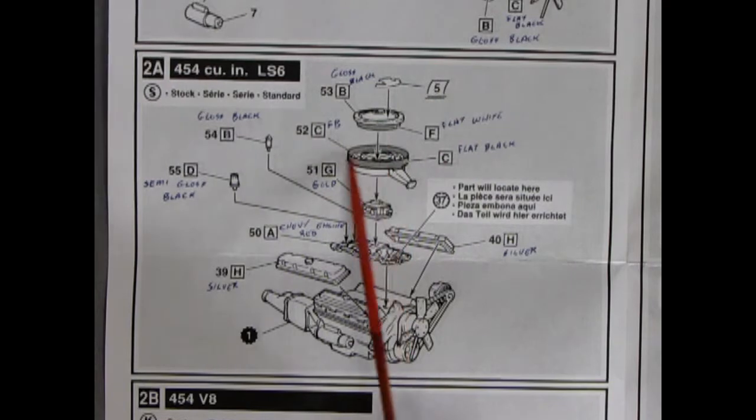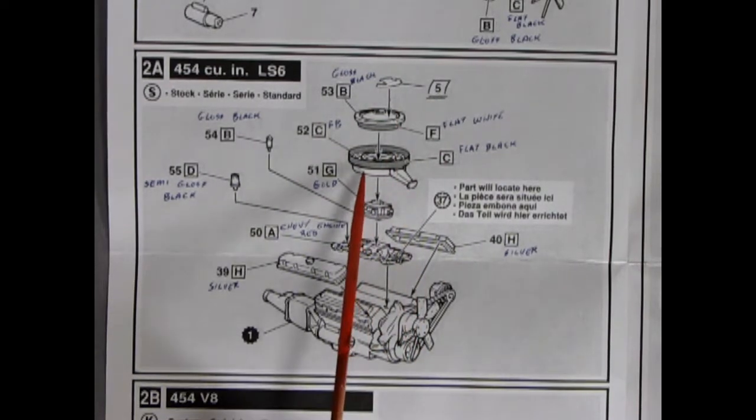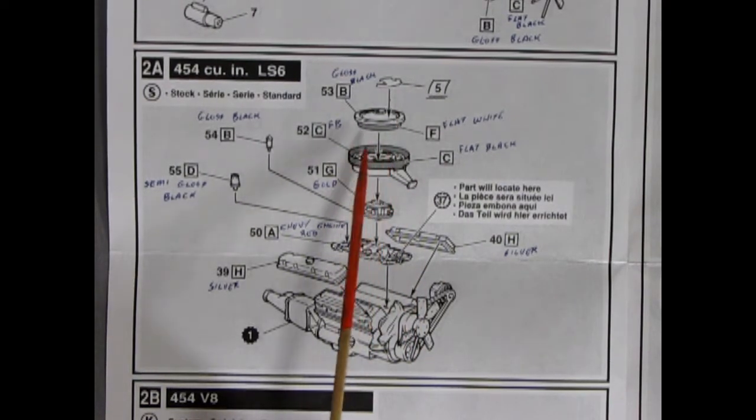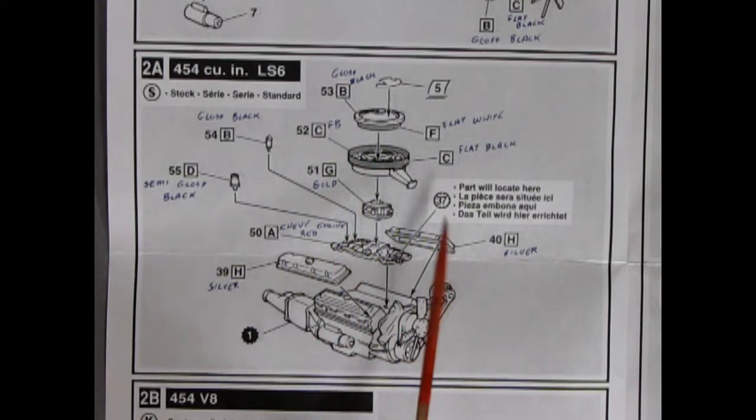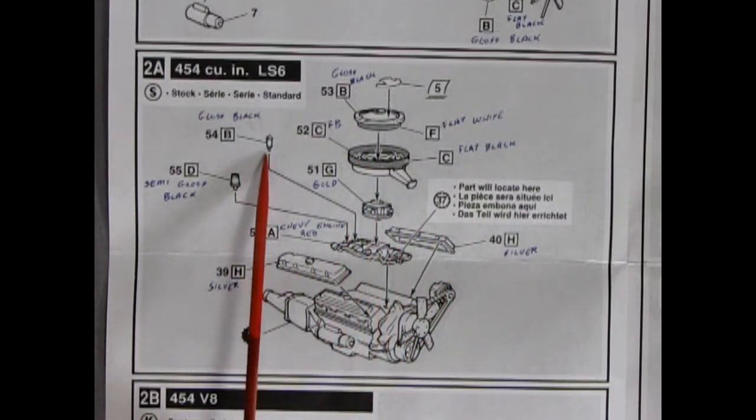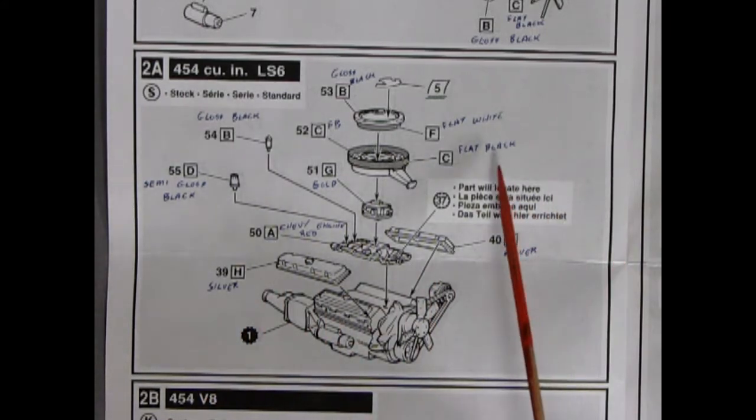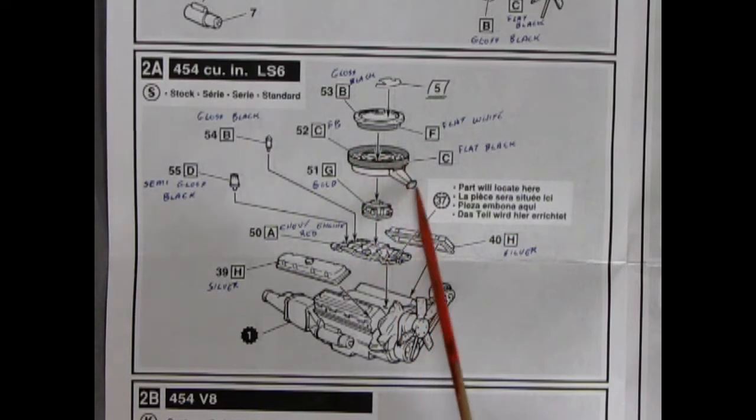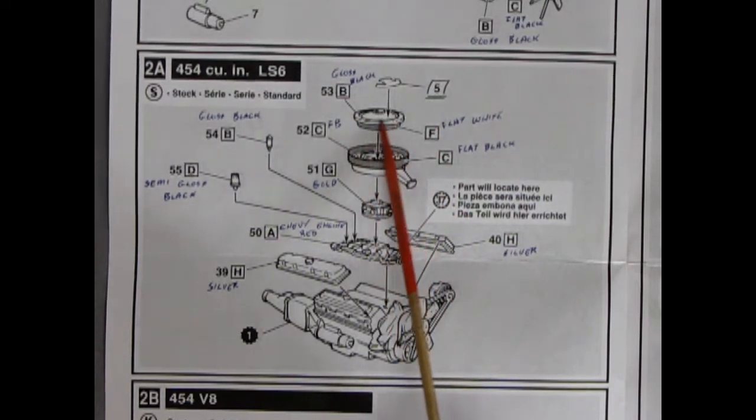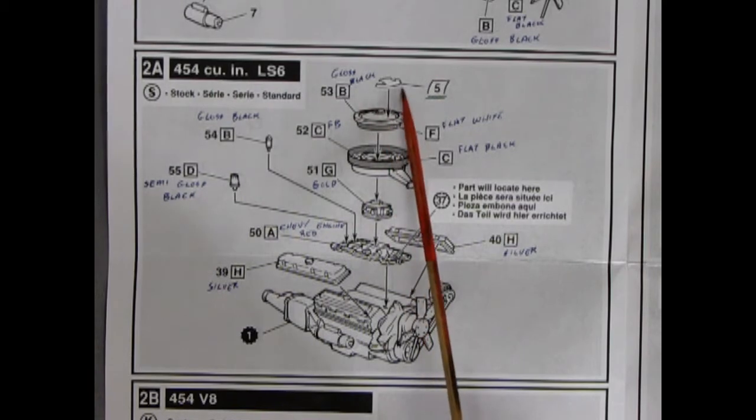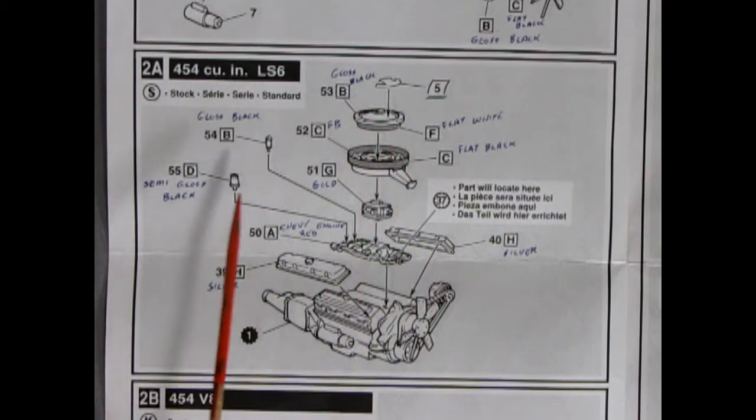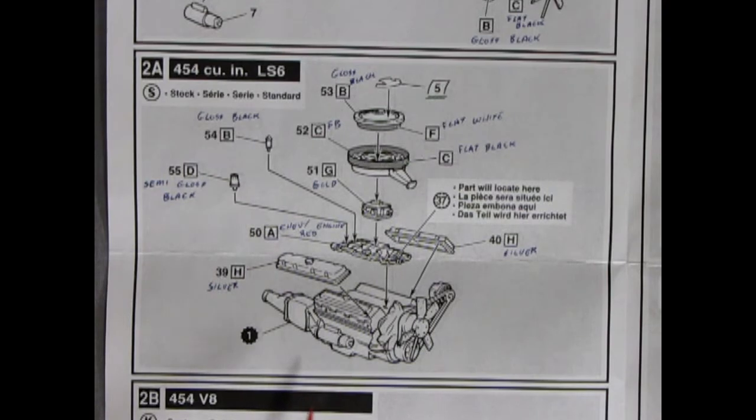And here we have the stock 454 cubic inch LS6 motor. The air cleaner, that big gigantic air cleaner goes on here. Ah, it's a ram air style with that nice seal that butts up underneath the hood. So that's why it's huge. Here of course is our coil going onto our intake manifold. There's the valve covers going on. They say to paint them silver so I guess they're not painted. Flat black for the thing there, flat white for open air element, gloss black. There's a decal goes on here for air cleaner. There's our distributor. And that's basically the LS6, the stock version.